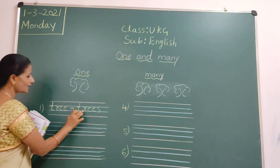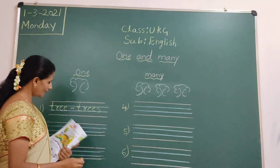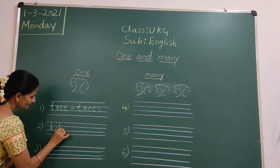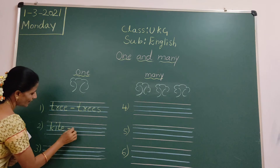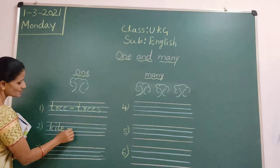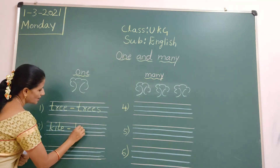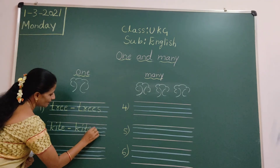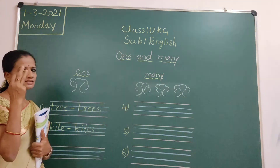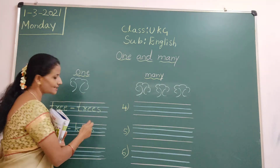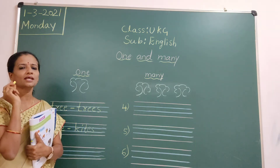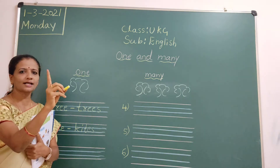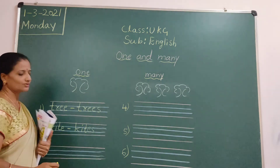Next: kite. K-I-T-E. Kite equals one, dash. Kites — one kite, three kites. One kite, three kites means kites. We will add S. Many kites are there means we will add S. Only one kite is there, we write 'kite'. Okay children?